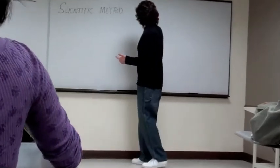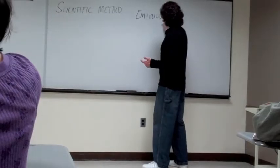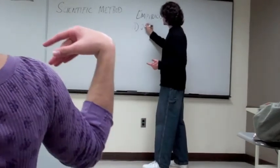Empiricism. Here's the word, empiricism. The two rules of empiricism are: everything that we study has to be observable.